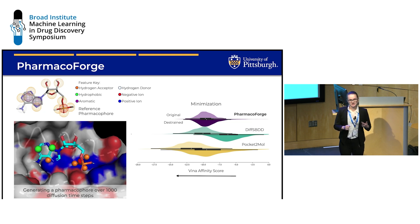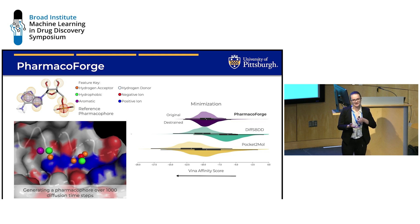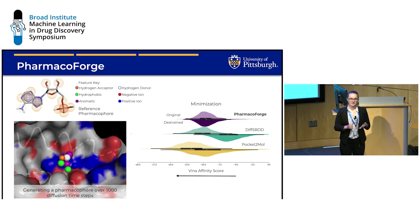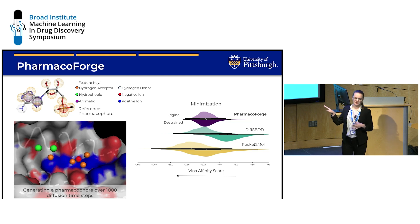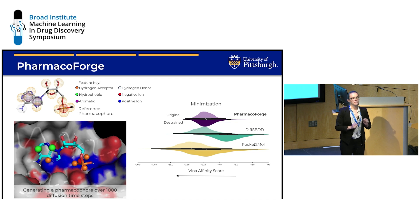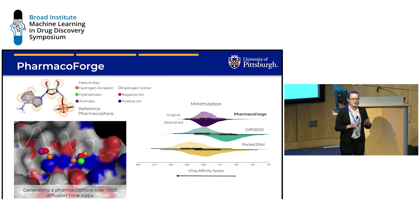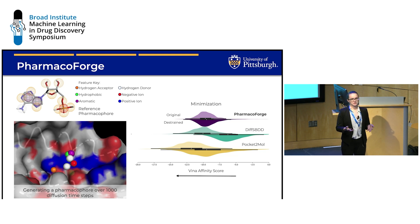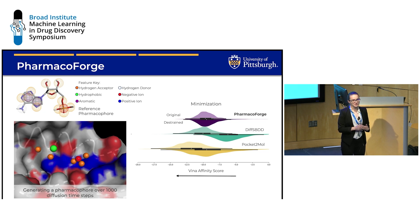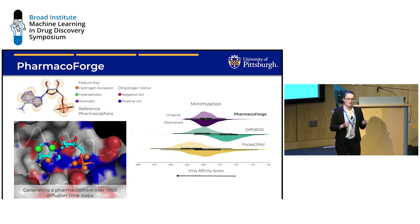One thing we noticed when visualizing the top-performing molecules from all methods is that generated ligands were often in highly strained poses, fitting very tightly into the pocket. We calculated the strain energy for all molecules and found that generated ligands had higher strain energy than those from the pharmacophore query. After re-minimizing and docking, shown in the dark color at the bottom of the plot, pharmacophore results stay about the same — which makes sense since these are commercially available compounds. But the generated ligands show decreased affinity because achieving high affinity required them to be in unnatural poses. This is a promising result showing that pharmacophores can overcome key problems in de novo ligand generation and find quality ligands with high predicted binding affinity.